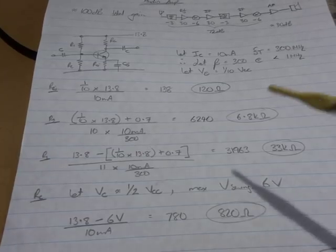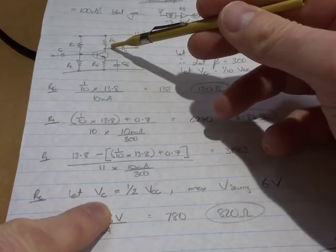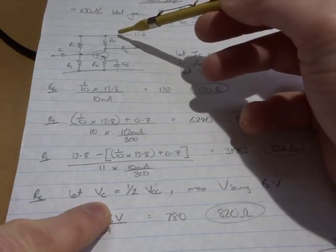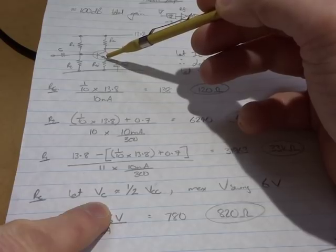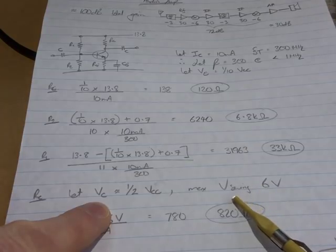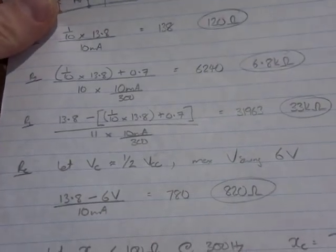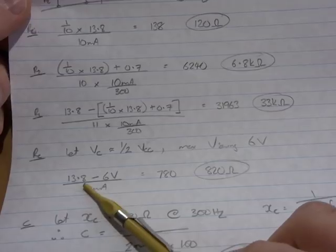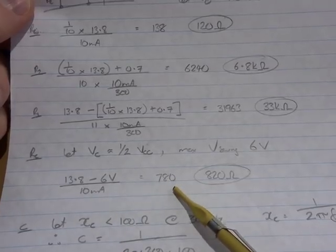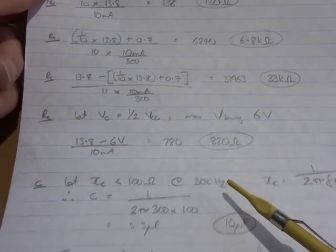In terms of our collector resistor, I'm setting up the collector voltage here to be roughly halfway between Vcc and ground, I'm going to have it slightly on the higher side, so when the voltage swings down here, we don't get too much close to pinch off. I'm going to allow the maximum voltage swing at the output to be roughly 6 volts, so 13.8 volts, our Vcc, minus that 6 volt drop, divided by our 10 milliamps, comes out at 780, and I'll just use 820 ohms.